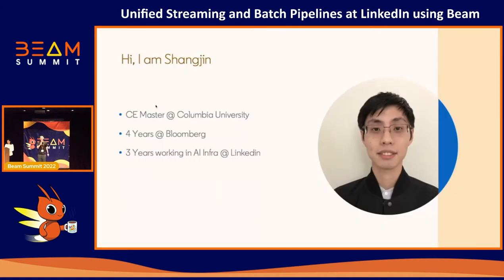A little bit more about ourselves. My name is Shang-Jing. After I graduated from Columbia University, I worked at Bloomberg for about four years, where I focused on financial streaming processing. About three years ago, I joined the LinkedIn AI infrastructure team. My interest has always been in big data technologies, especially how we can apply them to real-world use cases.